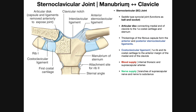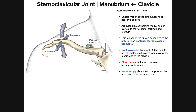The SC joint is an articulation between the manubrium of the sternum and the sternal end of the clavicle. The clavicle has two ends: a sternal end, which is more proximal or medial, that articulates with the manubrium of the sternum, and a more distal or lateral end, which is the acromial end, that articulates with the acromion of the scapula. That joint is the acromioclavicular joint, the subject of the next video. We're focusing here on the SC joint, which is the sternal end of the clavicle.